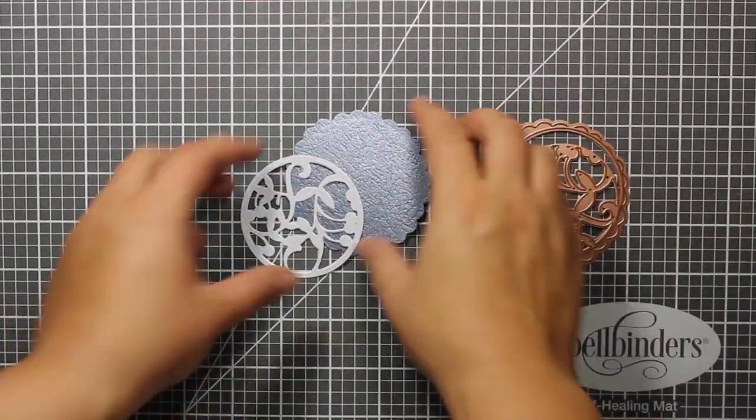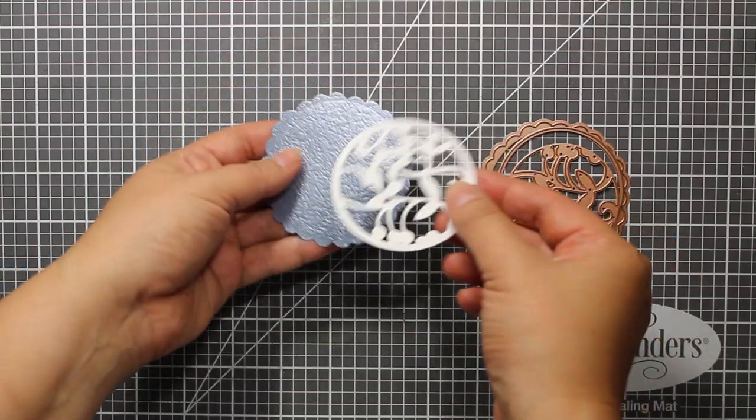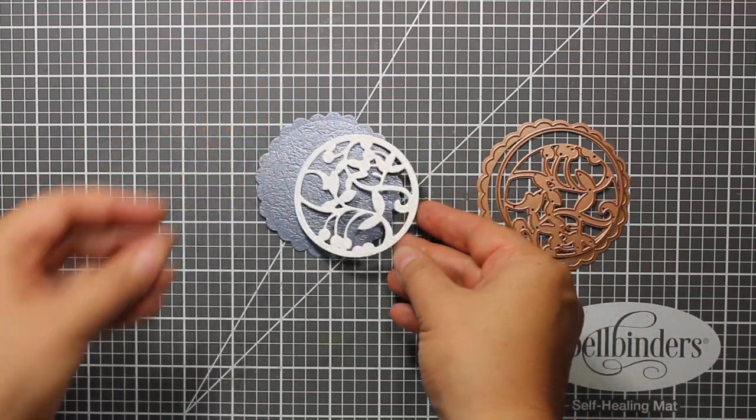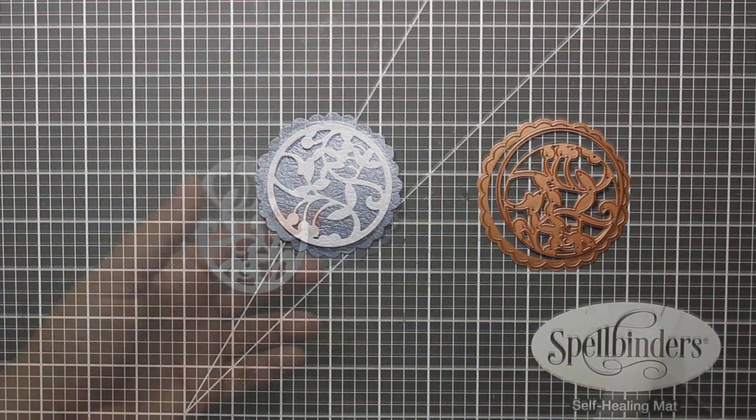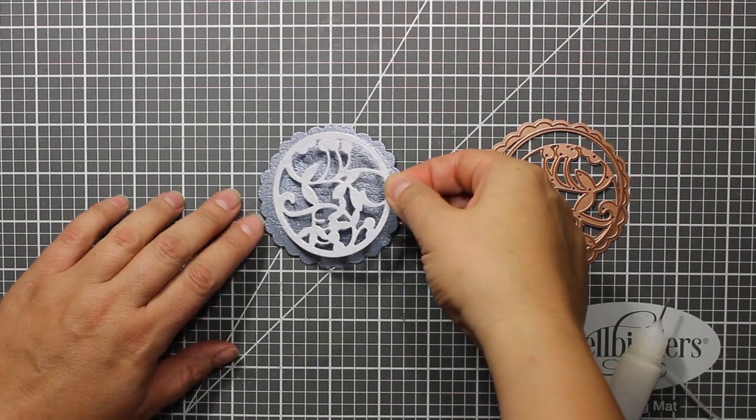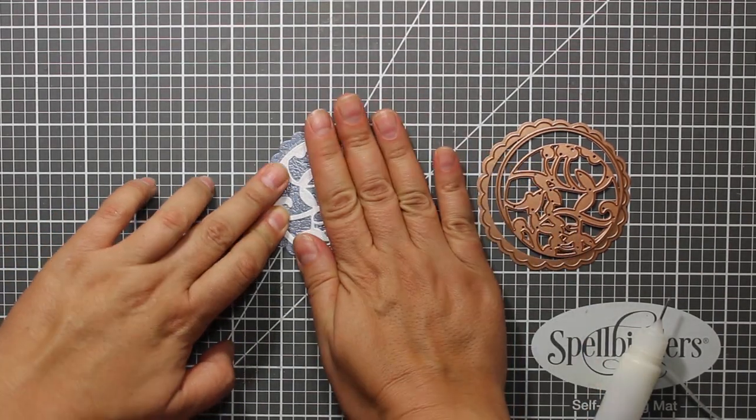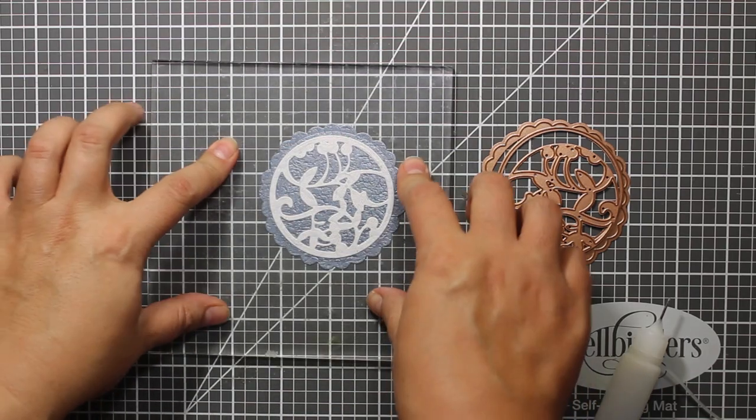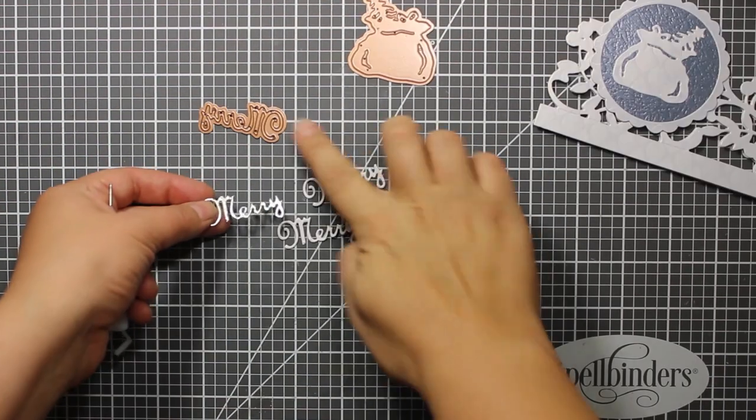I'm gonna be using mistletoe doily set again and this time I've die cut a decorative insert. Then I'm attaching this intricate insert on top of the plain background. This time I'm also going to attach a sentiment.